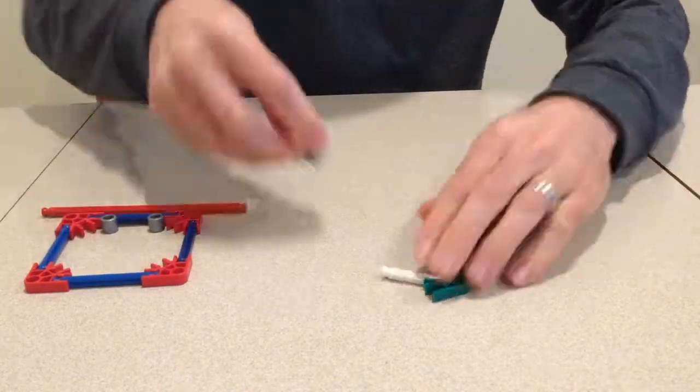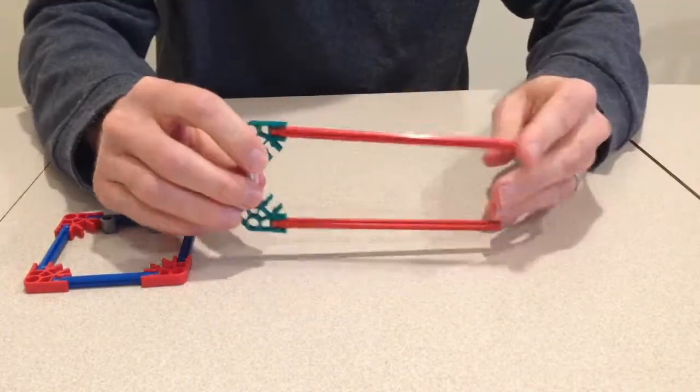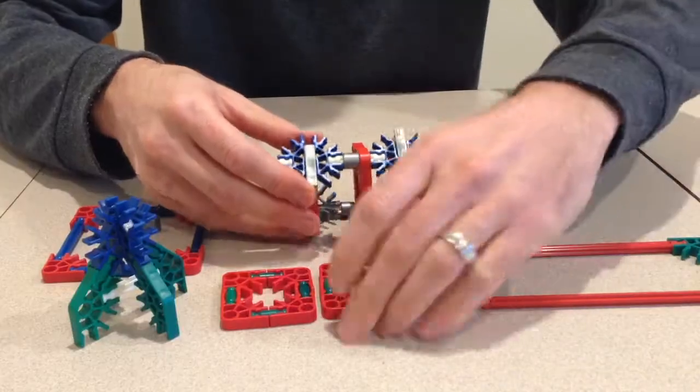Next, I will begin to make the back of the plane. This will be used to attach the fuselage and the cockpit together.